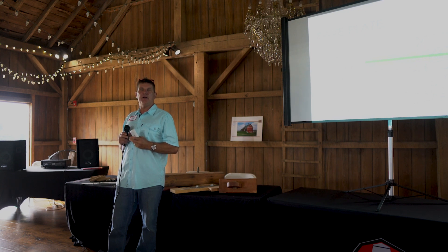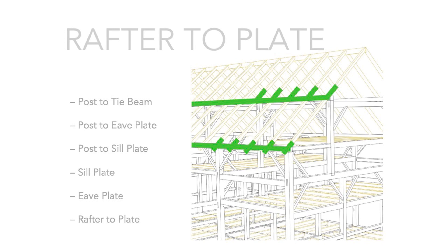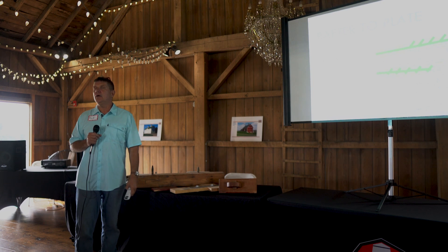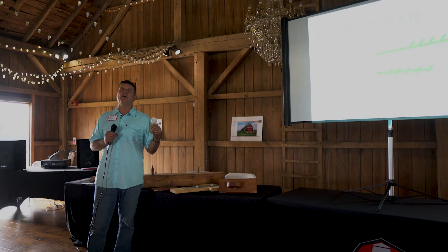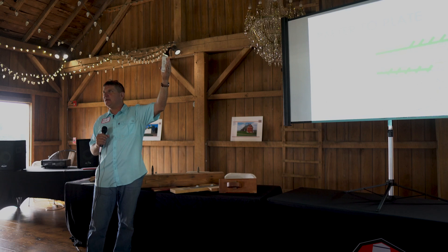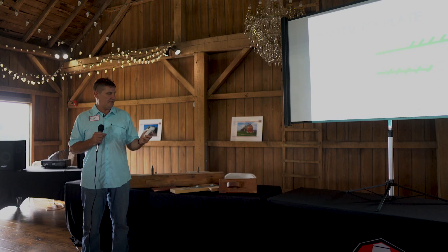Rafter-to-plate connections tend to go bad quickly if there is a bad roof, because both the purlin plate and the rafter plate sit horizontally so water sits on top of them. Checking in the top of the plate might allow water to go through it, or if there is a through tenon on the post-to-rafter-plate connection, water travels down that mortise, down the post, and rots the whole post out.